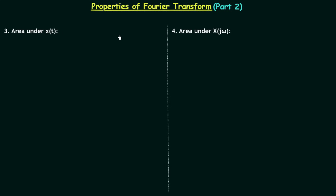In the previous lecture we had discussion on linearity and conjugation properties of Fourier transform. In this lecture we will understand two more properties: area under x(t) and area under X(jω).